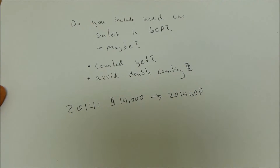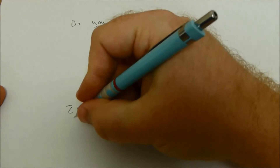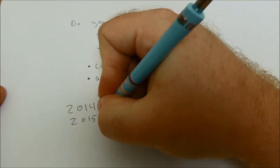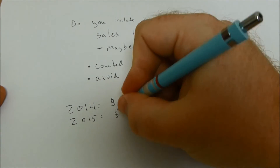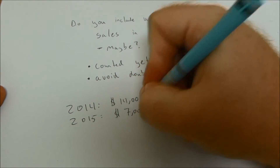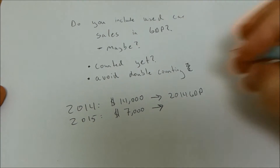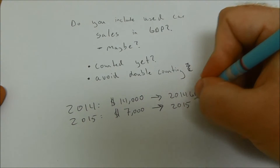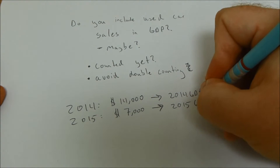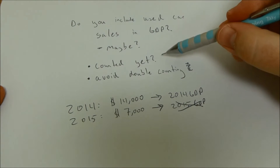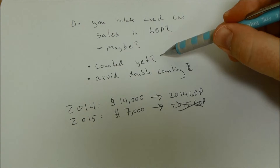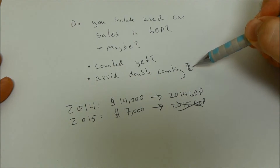Now let's assume the person who bought the car decides in 2015 to sell it to a dealer for $7,000. Is that included in 2015 GDP? The answer is no, because it was already counted in 2014 GDP and we want to avoid double counting.